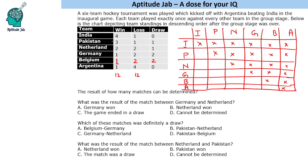It is given that in the first match Argentina beat India, so Argentina is the winner there. India won four matches and lost one, so India wins all its remaining matches. For Argentina, they won only one match and lost four, so Pakistan is the winner against Argentina, Netherland is the winner, Germany is the winner, and Belgium is the winner against Argentina.